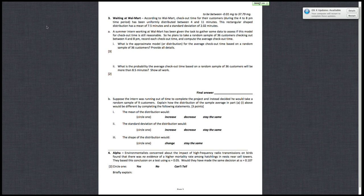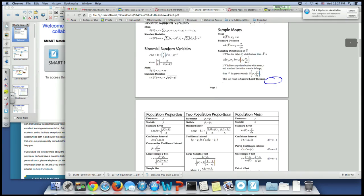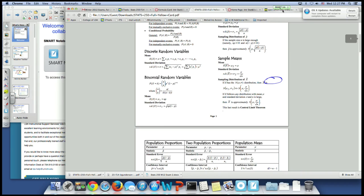So he plans to take a random sample of 36 customers checking out between 4 and 8pm, record each checkout time and compute the average checkout time. So the question is, what is the approximate model or distribution for the average checkout time based on a random sample of 36 customers? So since we're dealing with the sampling distribution for the mean, you want to look over here for your sampling distribution of x bar.